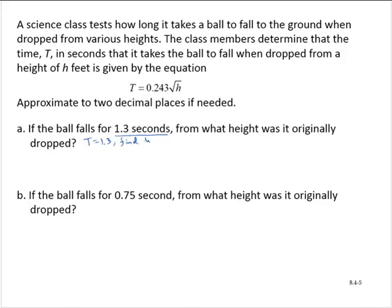So substituting for t, we would have 1.3 is equal to 0.243 times the square root of h. So we need to solve for h. And notice that it's under a radical. So what we need to first do is isolate the radical. I'll do that by dividing through both sides by 0.243.